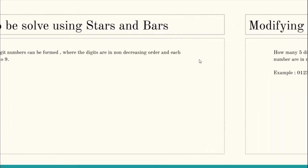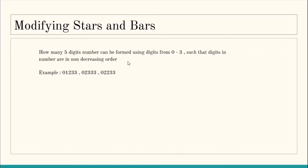As an example, consider finding the total number of five-digit numbers such that the digits are in non-decreasing order and each digit can be filled from 0 to 3. Some valid examples are shown — these are all five-digit numbers, and you can have zeros at the starting position. This is a valid five-digit number: first, it has five digits, and second, all the digits are in non-decreasing order. The same goes for the other example numbers.